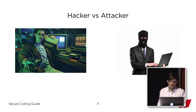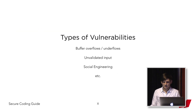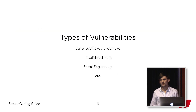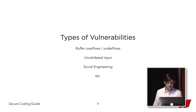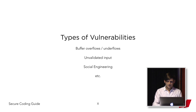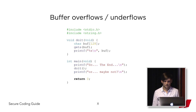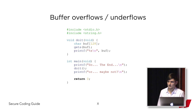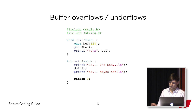Let's take a look at what kind of vulnerabilities are covered in this document. One of them is buffer overflows and underflows, also unvalidated input, social engineering, and some other things. I'll start with buffer overflows and underflows, and I prepared this small code snippet — it's C code, but don't be scared, we're going to go line by line to understand what is going on.